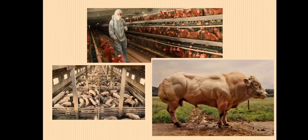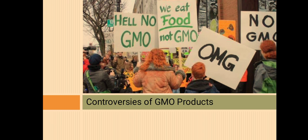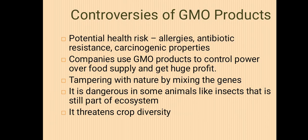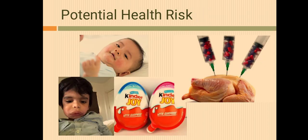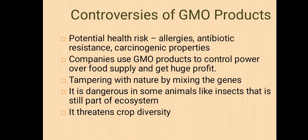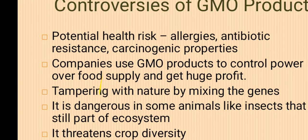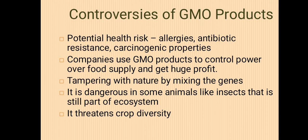Now, controversies over GMO products. Who here has allergies — to chicken, peanuts, soy products, or milk products? One out of nine children in America have allergies, largely because most of the products they consume are GMO. GMO products are also very high in antibiotic and carcinogenic properties — carcinogenic meaning cancer-causing. Companies also use GMO to control power.